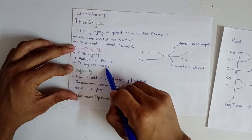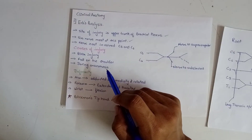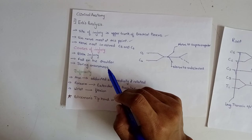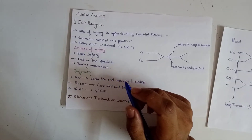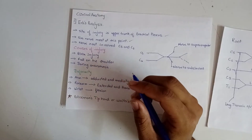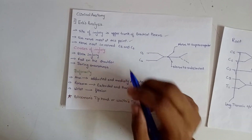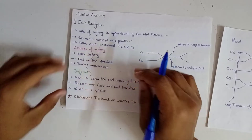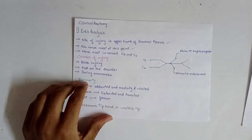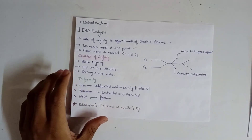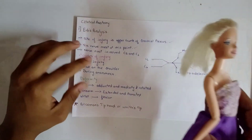Birth injury involves traction of the arm and hyperextension of the neck — the same mechanism with an excessive angle between the shoulder and neck, leading to injury of the upper trunk. During anesthesia, a needle mistakenly damages the upper trunk, leading to nerve injury and deformity.